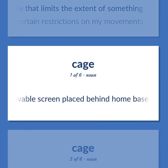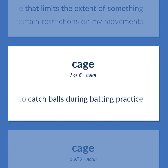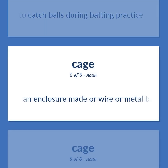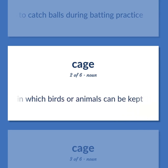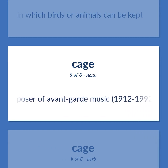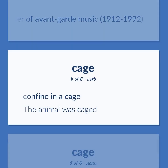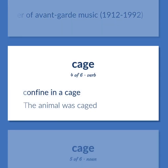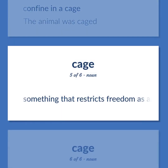Cage: A movable screen placed behind home base to catch balls during batting practice. An enclosure made of wire or metal bars in which birds or animals can be kept. United States composer of avant-garde music, 1912–1992. Confine in a cage — the animal was caged. Something that restricts freedom as a cage restricts movement.